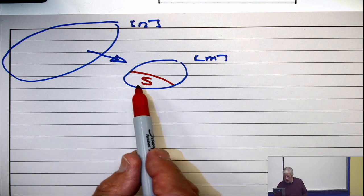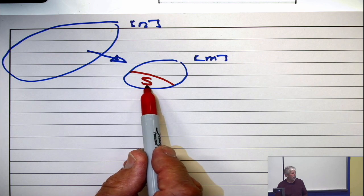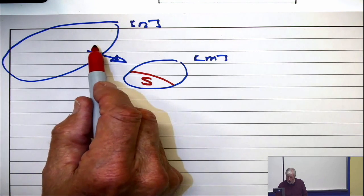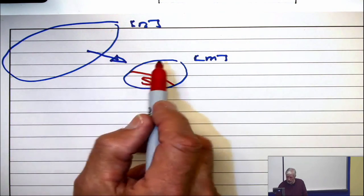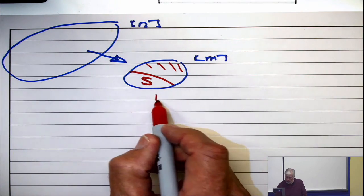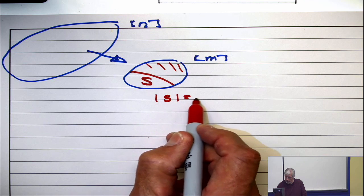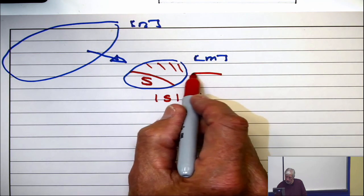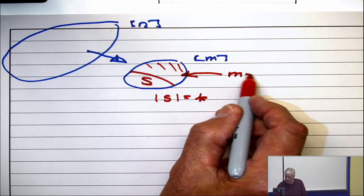So how many functions satisfy all those properties? Well, what you're going to do is map all these guys down onto these. And if the cardinality of s is k, how many elements are in here? Well, m minus k.